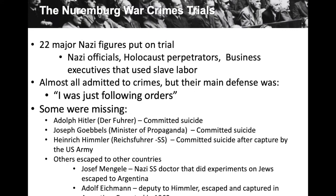There were 22 major Nazi figures put on trial at the Nuremberg war trials, along with others who were not major figures. Those put on trial included Nazi officials, Holocaust perpetrators, and business executives who used slave labor — some factory owners were put on trial because their factories used people from concentration camps. Almost all admitted to crimes because the evidence was overwhelming, but their main defense was 'I was just following orders.'